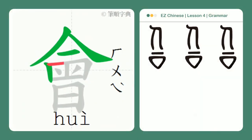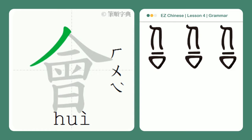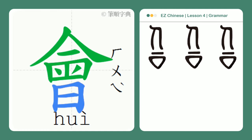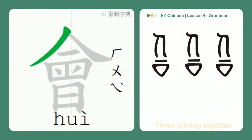The pictographic character Hui is made up of the radical — the first three strokes — representing the ancient concept of many. That is, one equals unity, two is duality, and three is all the rest, or many. The important thing here is the idea of three, or many, joining together.